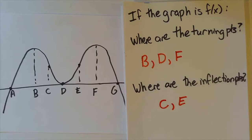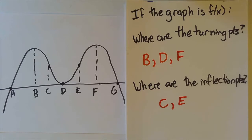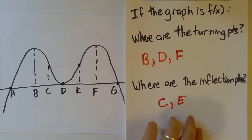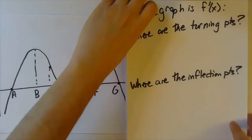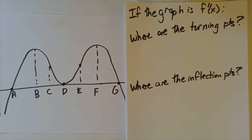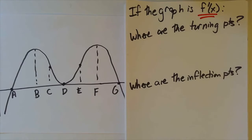That's probably pretty familiar since we've been doing a bunch of examples. But that's not the main thing I wanted to do in this video. The main thing is to answer this question: if instead of being a graph of f itself, this graph is a graph of the derivative of f, what does that tell us about the turning points of f and the inflection points of f? To do this, we have to think back to what the graph of the derivative is telling us — what it means to have a graph of the slopes of the tangent lines at each point.